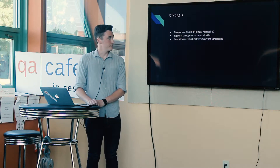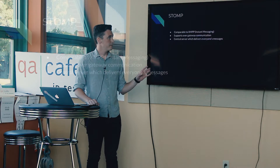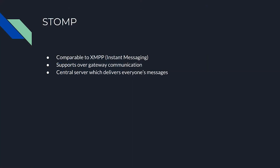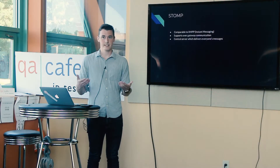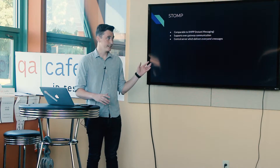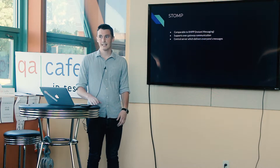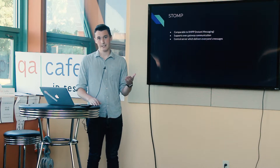Then there's Stomp, which is quite a bit like XMPP — the way instant messaging works. Stomp has a central Stomp server and everyone is a Stomp client that connects to the server and subscribes to certain channels. In the context of USP, both a controller and an agent would just be Stomp clients that connect to a shared server and say: can you send my agent this message? And the Stomp server will forward it to the agent.